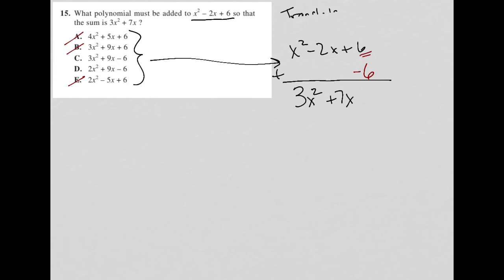The next thing I notice is that I started off with an x squared and I'm ending up with a 3x squared, which means I should be adding 2x squared because x squared plus 2x squared is 3x squared. And that gets rid of choice C, leaving me with choice D as my answer.